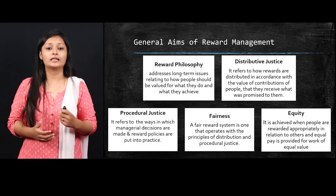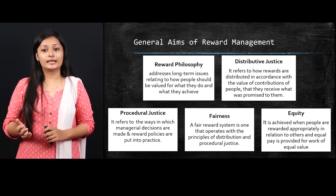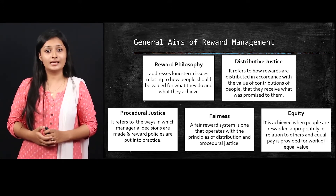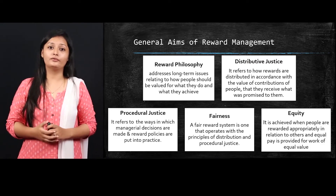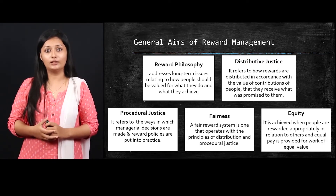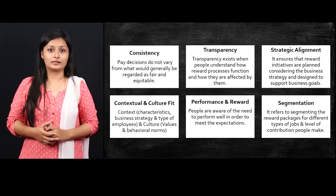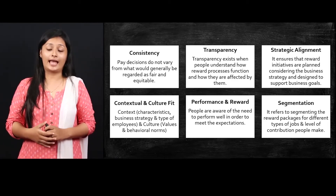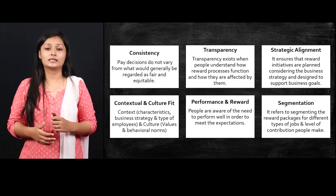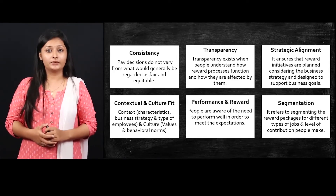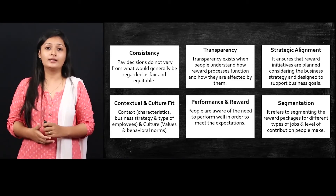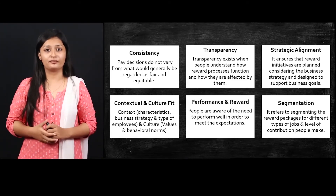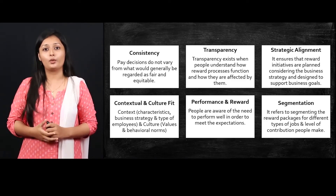Next is fairness. A fair reward system is one that operates with the principles of both distributive and procedural justice. The next is equity, which is achieved when people are rewarded appropriately in relation to others, and equal pay is provided for work of equal value. The next is consistency — pay decisions should not vary from what would generally be regarded as fair and equitable. Next is transparency, which exists when people understand how reward processes function and how they are affected by them.